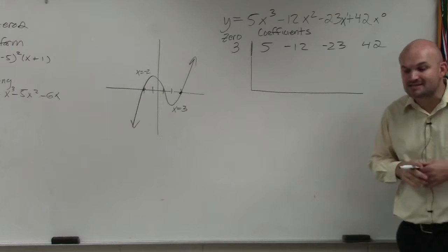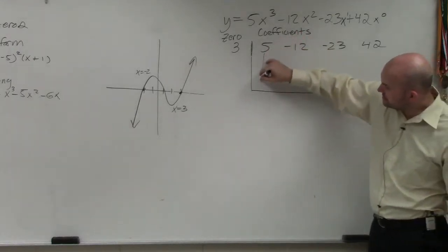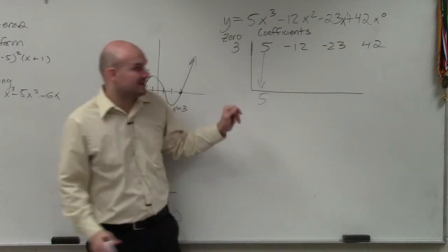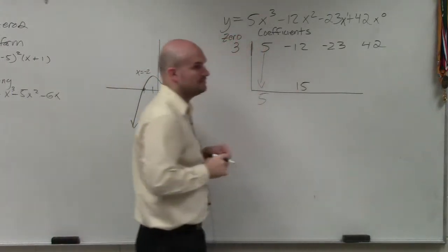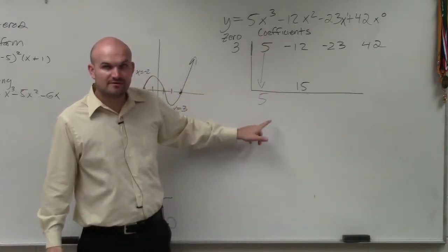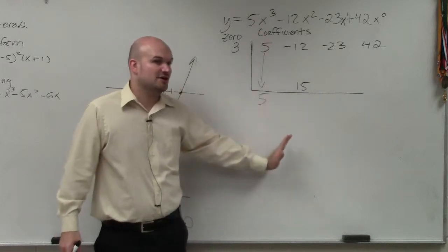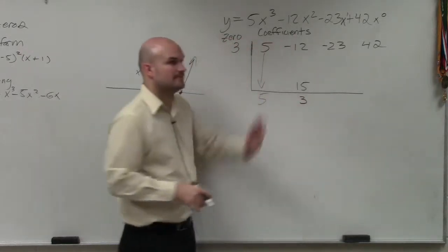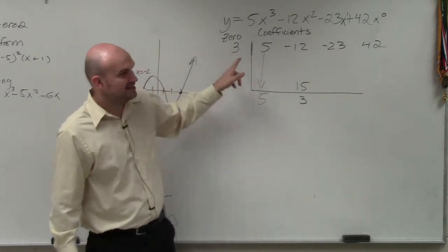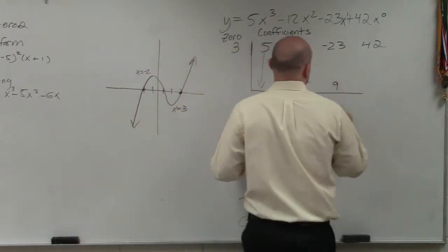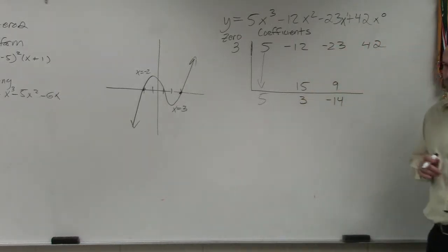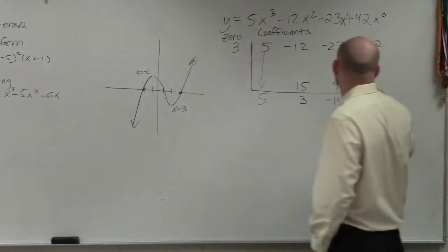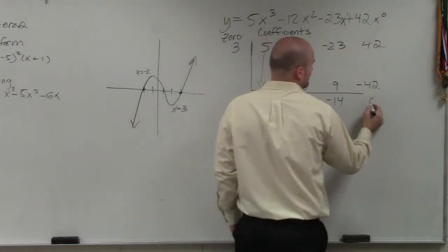Now, the process — the algorithm for synthetic division — is you bring down the first number, and that's kind of like your freebie. Then you multiply on the diagonal: 5 times 3 is 15. Brought down the 5, 5 times 3 is 15. Add vertical, multiply diagonal. Negative 12 plus 15 is 3. Add vertical, multiply diagonal. 3 times 3 is 9. Negative 14, negative 14 times 3 is going to be negative 42. Add vertical, you get 0.